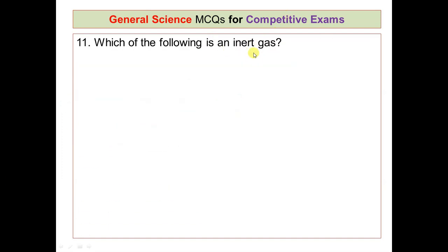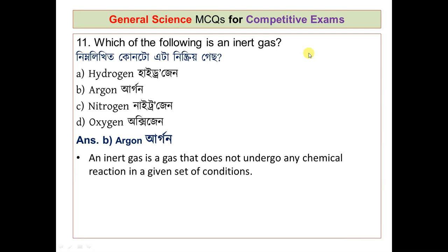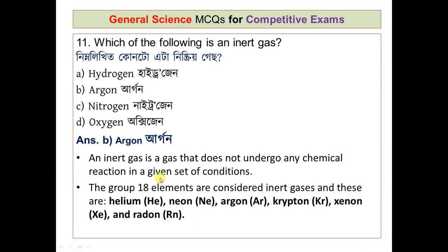Question number 11: which of the following is an inert gas? An inert gas is one that does not undergo any chemical reaction under a given set of conditions. The Group 18 elements are considered inert gases and include helium, neon, argon, krypton, xenon, and radon.